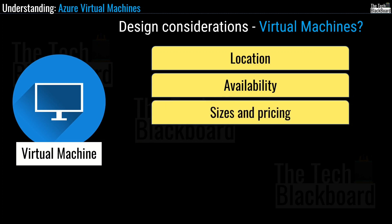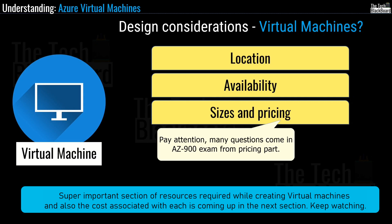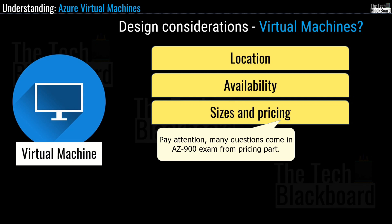Now let's discuss sizes and pricing. Your workloads will decide the size of virtual machines you use, and the size determines factors such as processing power, memory, storage capacity and network bandwidth. Azure offers a wide variety of sizes to support different needs. Azure charges an hourly price based on virtual machine size and operating system. For partial hours, Azure charges only for the minutes used — it is a consumption-based model. Storage is priced and charged separately.